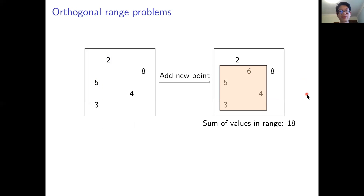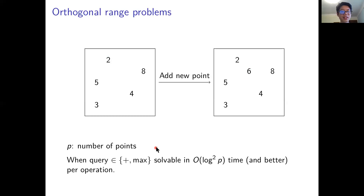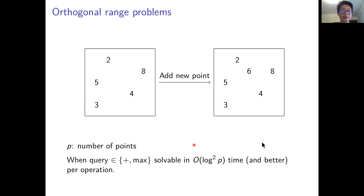Each individual problem is parameterized by the type of queries supported. If p is the number of points in two dimensions, and our query is either the sum — denoted by plus, the semi-group operator — or max, asking for the maximum value in the range, we can solve these in order log-squared p time or better per operation, depending on which queries and updates are supported.